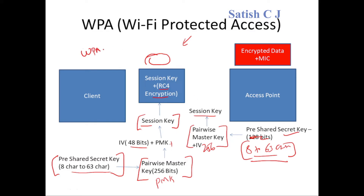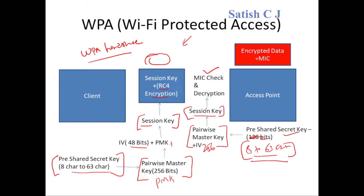The session key is generated from the Pairwise Master Key and other factors via the WPA handshake. The access point generates the same session key on its side, which it uses for decryption. Decryption first involves checking the MIC to verify the data has not been altered in transit; once the MIC check passes, decryption happens using the session key.